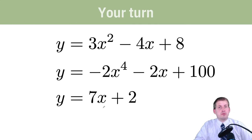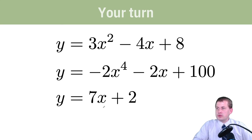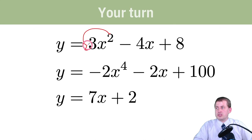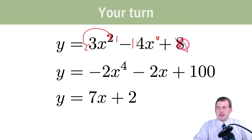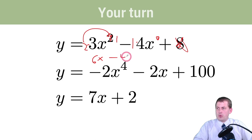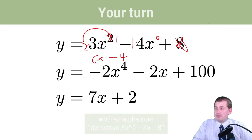Let's do one practice example: for 3x² - 4x + 8, we follow the power rule — bring the 2 down: 2 × 3 = 6x; the -4x term: bring 1 down to get -4, and it disappears. So the derivative is 6x - 4. That's tedious to do by hand, so instead we'll use a different tool.